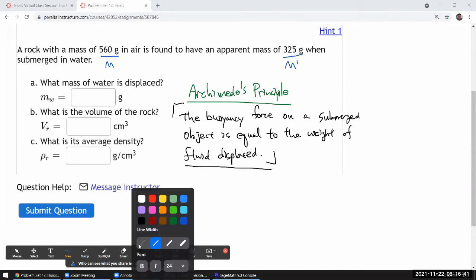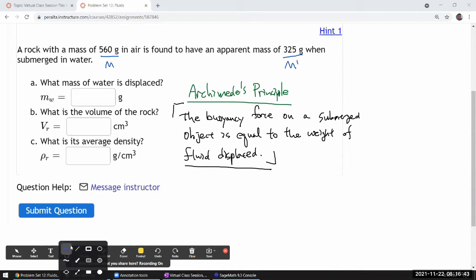What mass of water is displaced? Well, the principle gives the weight of the water displaced, but we can figure out without doing unnecessary calculation what mass corresponds to the weight. So we have a rock which is measured with some mass, usually by weighing it, and as it's in water it's found to have a different apparent mass, again found by weighing it.